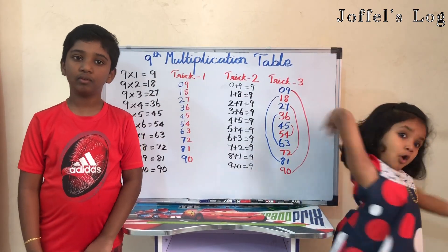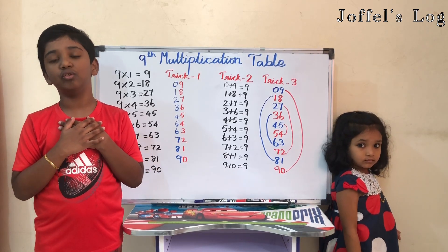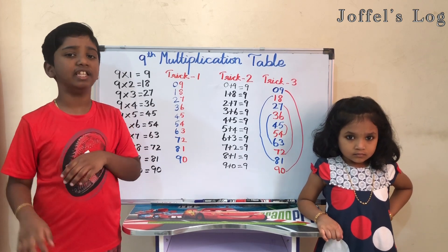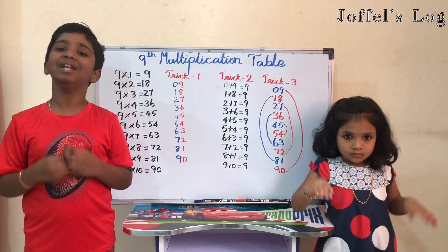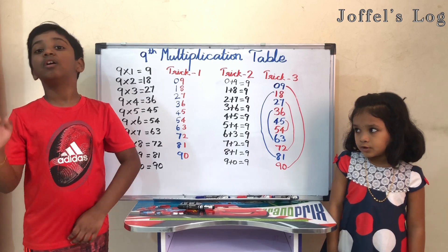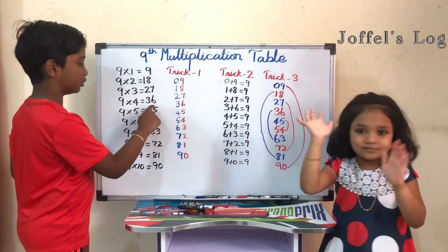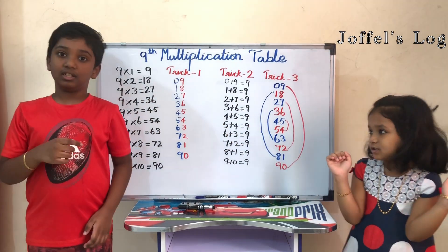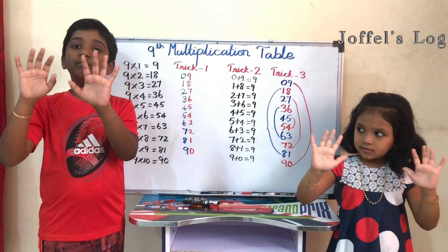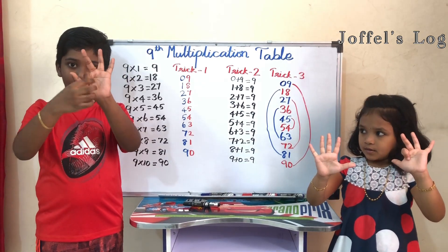Now trick number four. Trick number four is the easiest trick to do multiplication in the nine times table without using any pen or paper — only with our fingers. Let's do nine times four with our fingers. Let's check the board first: nine times four equals thirty-six. Now I am going to use my fingers. Take the number four finger and bend it down.